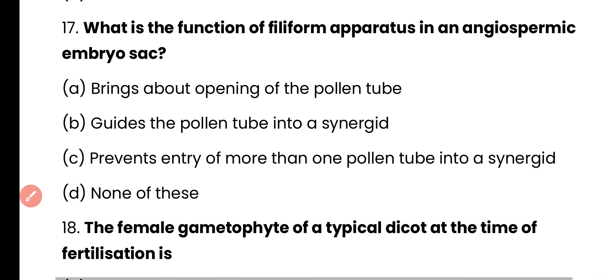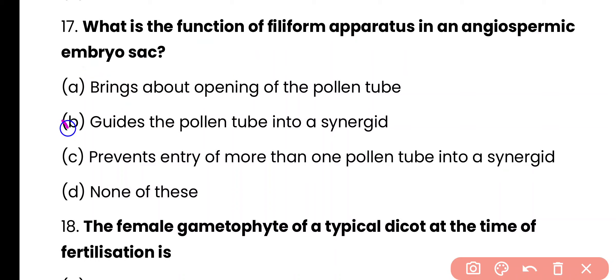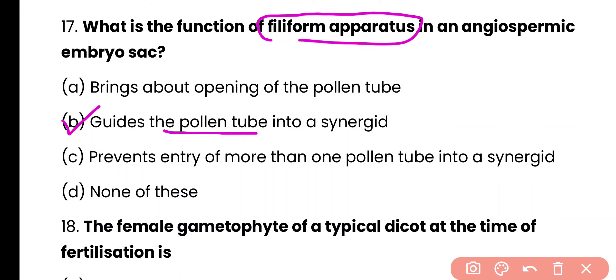Question number 17. What is the function of the filiform apparatus in an angiospermic embryo sac? It brings about opening of pollen tube, it guides the pollen tube into a synergid, it prevents the entry of more than one pollen tube into a synergid, or none of these? The correct answer is option B. The filiform apparatus guides the pollen tube towards the egg through the synergid.